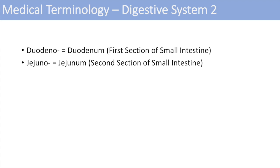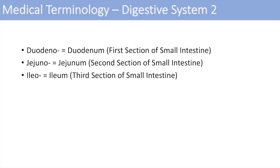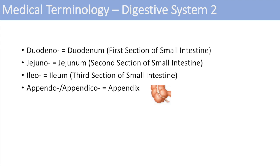The next one is jejunum, the second section of the small intestine — you could have a jejunectomy, a surgical removal of part of the jejunum. Ileo stands for the ileum, the third section of the small intestine. You might have heard of the ileocecal valve, where the end of the ileum meets the beginning of the cecum. Appendo or appendico stands for the appendix — appendicitis is an easy way to remember that. The appendix is the vermiform structure that dangles off the cecum. Ceco or typhlo denotes the cecum.